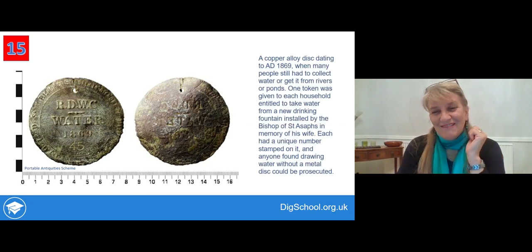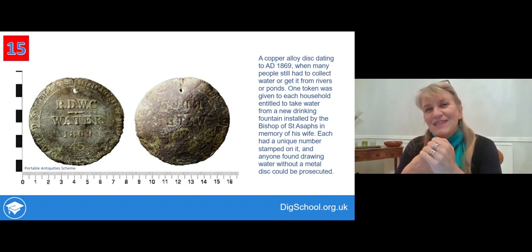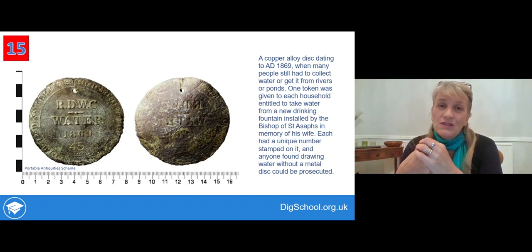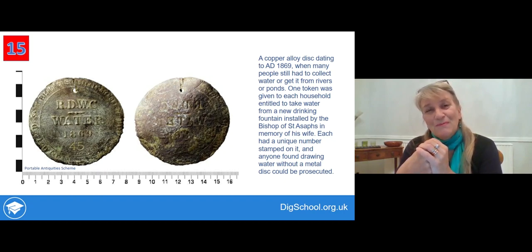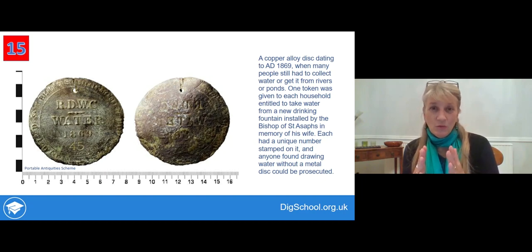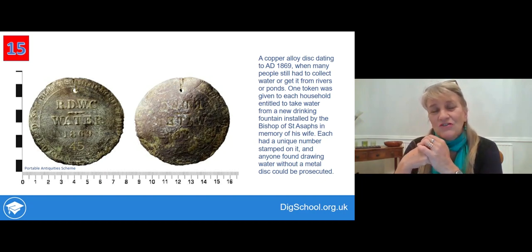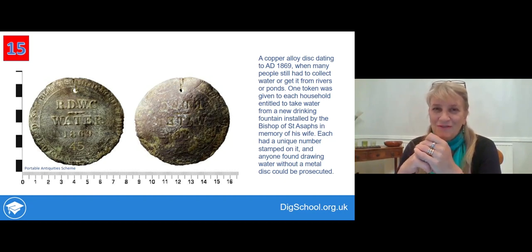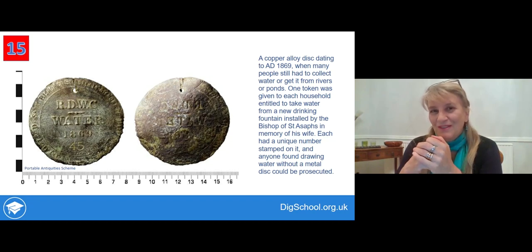This is from the middle of the 19th century, still a time when most people didn't have access to water in their homes — they would have to get water out of rivers, streams, or even ponds. This is a token issued by the Bishop of St. Asaph, who created a water fountain so people could get cleaner water in the middle of their high street. But only certain people were allowed to get it, so he issued coins — each one had a unique number on it; this is number 45, and you couldn't take water unless you'd got one of these coins. It reminds us how only 150 years ago, life was really quite different for a lot of people.